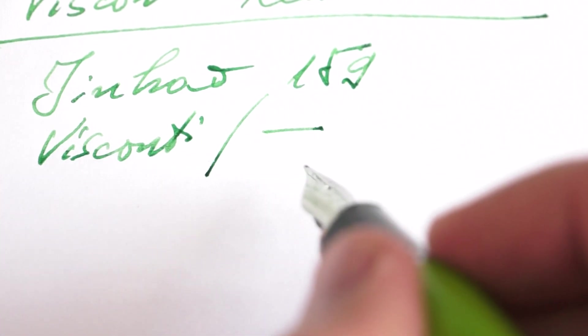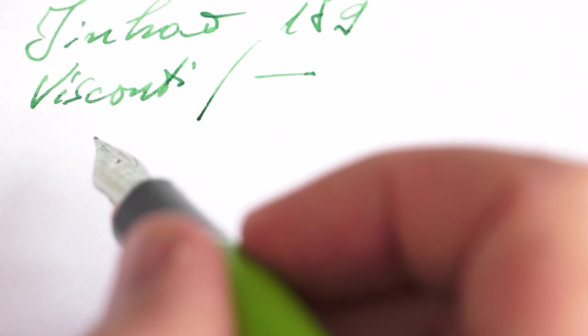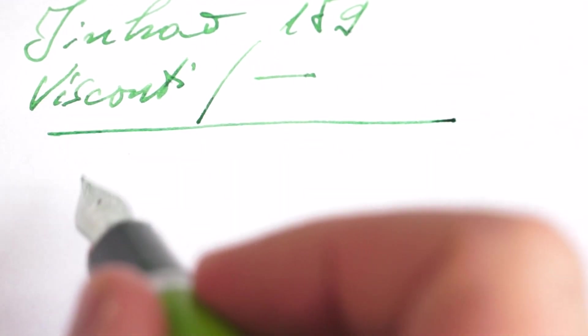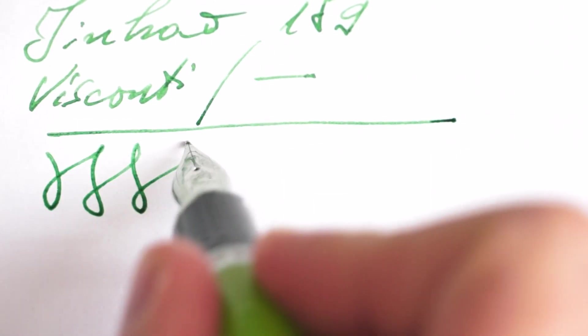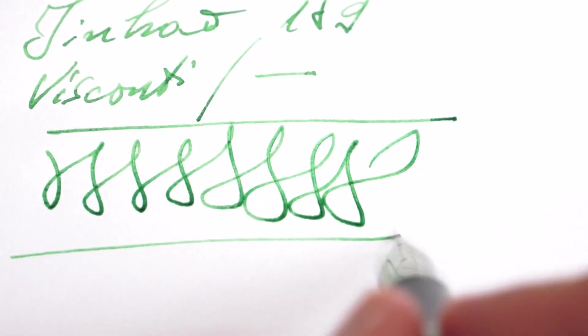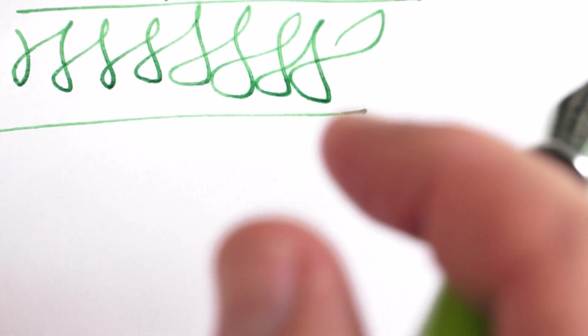I would say Visconti have more beautiful designs, but from the point of view of the nib, the steel nibs that they have in Michelangelo, Rembrandt version or Van Gogh, then this Jinhao writes pretty similar to it. It gives the same feel to the writing. It's a good starter pen. This can be purchased for less than five euros or five dollars.